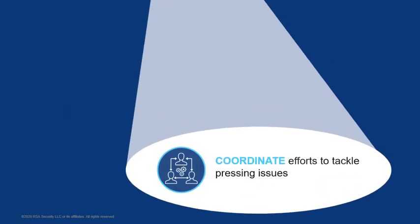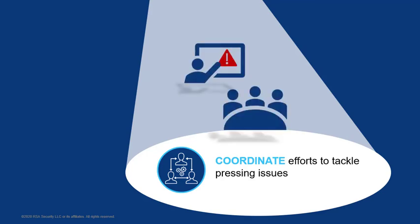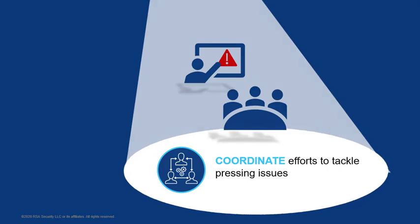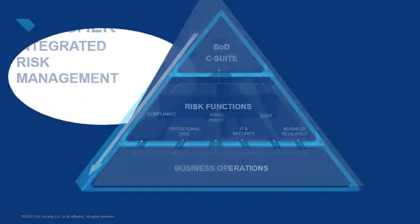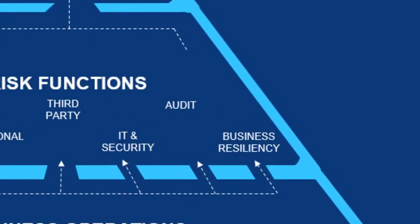Archer Audit Management allows you to catalog all issues raised by internal audit, risk, and compliance teams or management within one central system. Archer offers a holistic view of issue significance and remediation status for all teams. Audit teams are a critical element in your organization's strategy to address all types of risk.